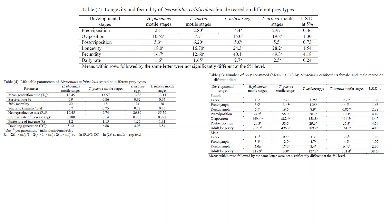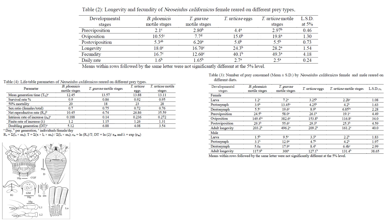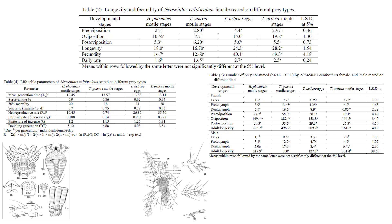Additionally, Neoseiulus californicus had poor efficacy against the guava eriophyid mite, Tegolophus guavae, in a 2017 report by El Halawani. Intrinsic rate of natural increase was 0.14, finite rate of increase was 1.5, and doubling time was 6.8 days. All of these above factors were the lowest rates in their respective categories in comparison with the prey Tetranychus urticae and Brevipalpus phoenicis, against which it performed much better.